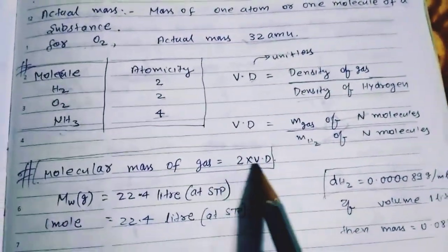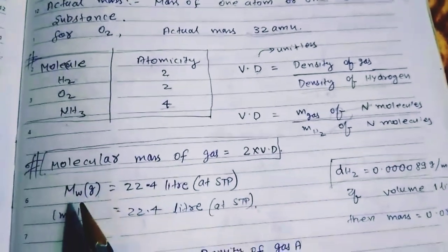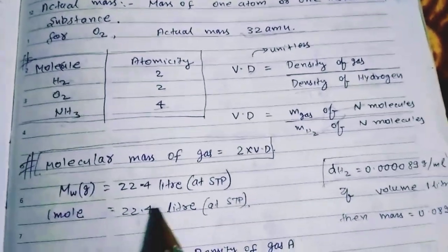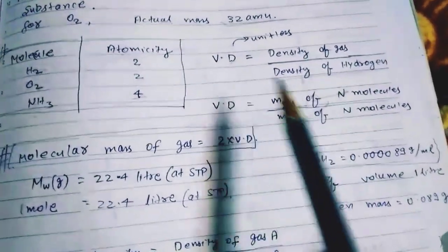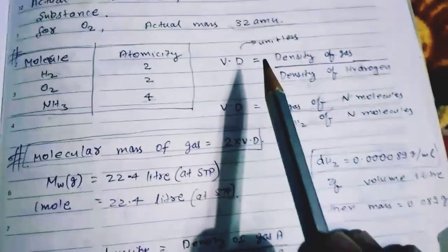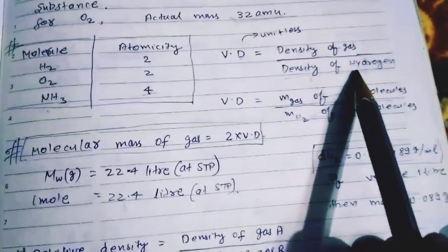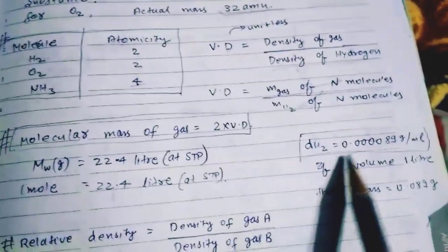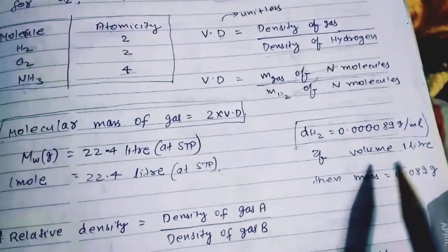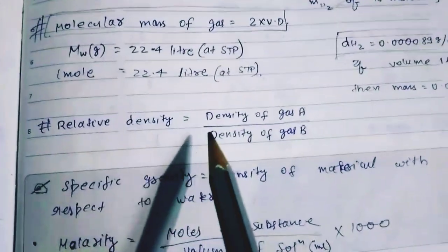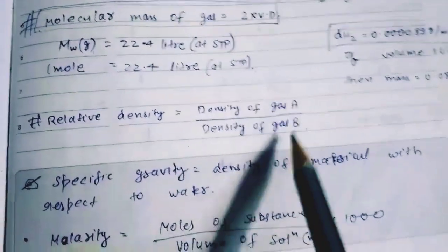Vapor density formula याद memorize कर लेना: molecular mass is equal to 2 into vapor density (VD). One mole of gas at standard temperature and pressure is equal to 22.4 liter. Density of gas is unitless. Density को calculate करते हैं: density of gas divided by density of standard gas — जो question में दिया होगा। Example: density 0.0000019 gram per ml, volume 1 liter, तो mass = 0.0019 gram. Relative density of gas A compared to gas B is calculated similarly.